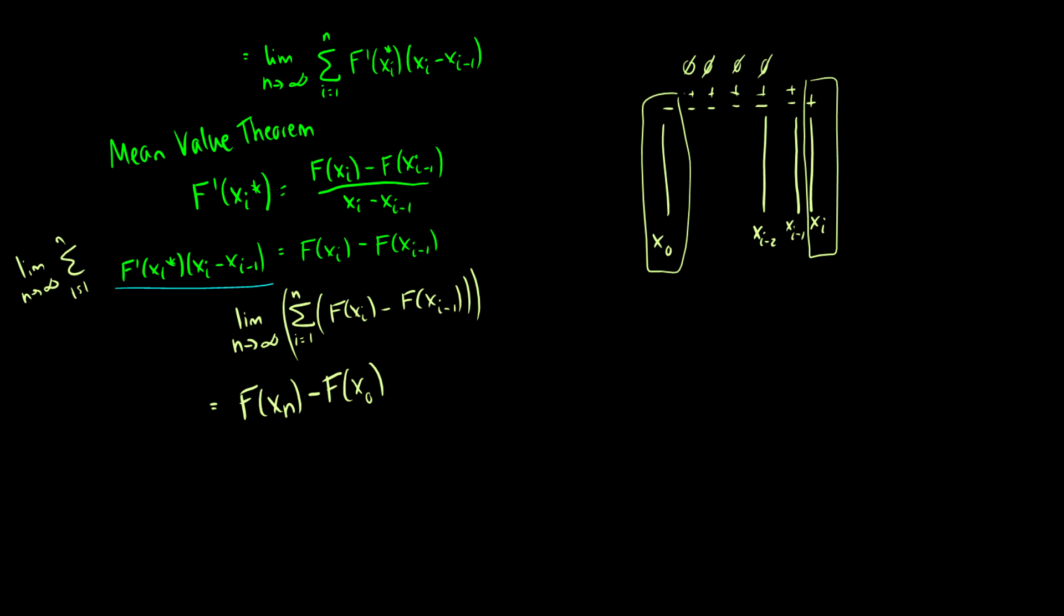All right, we just have one more step. We know that x_n is our last value and x_0 is our first value, so this really just is f of b minus f of a.